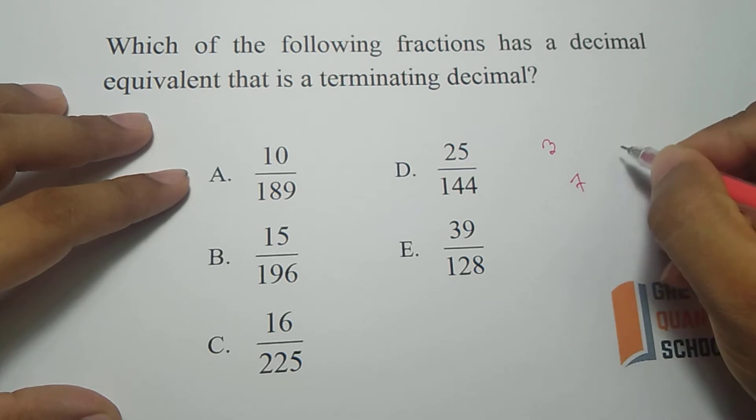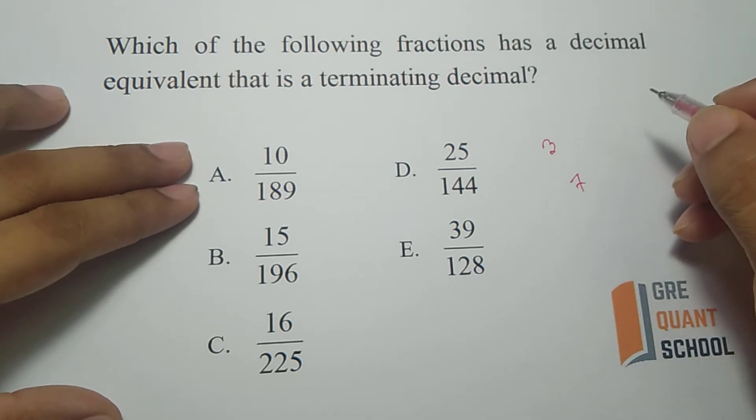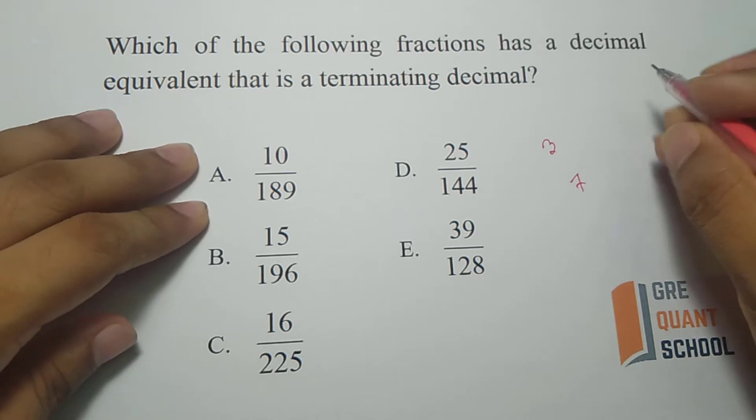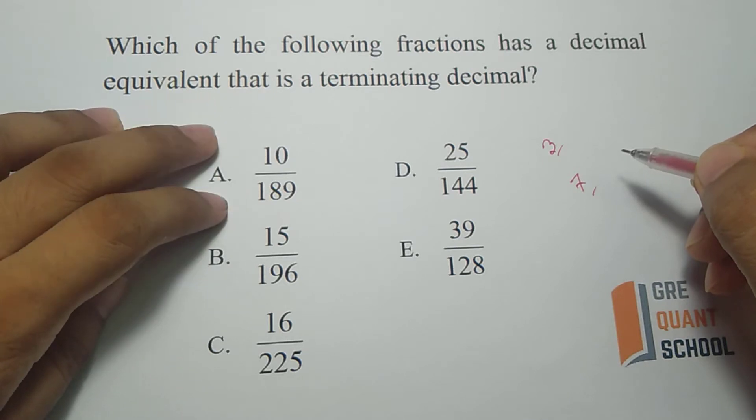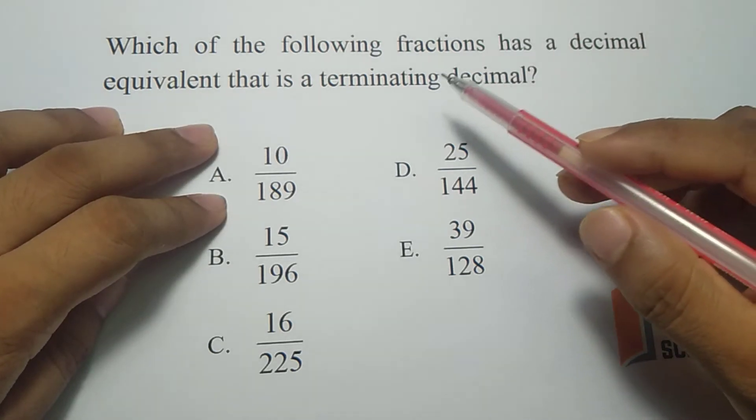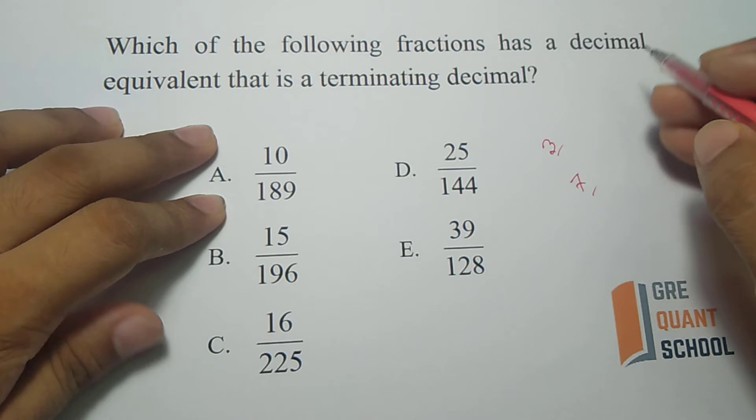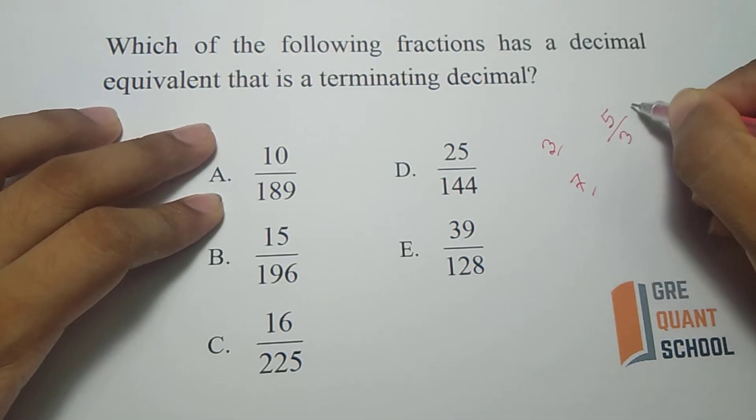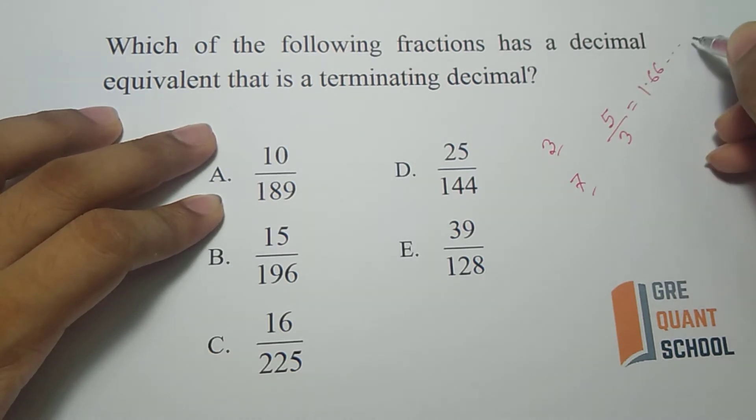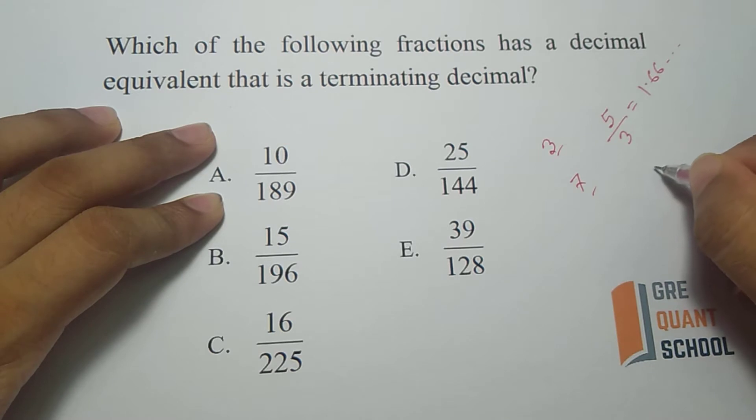If 3 or 7 are in the denominator then the fraction is equivalent to a non-terminating decimal. Like if we divide 5 with 3 which is equivalent to 1.666, it's non-terminating. Or divide 8 with 7, it's equivalent to 1.142, it's non-terminating.